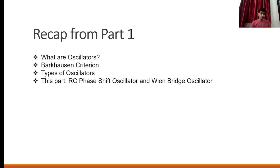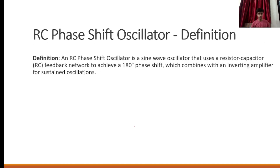In this part, we will discuss the RC phase shift oscillator and the Wien bridge oscillator. So what is the RC phase shift oscillator? An RC phase shift oscillator is a sine wave oscillator that uses a resistor-capacitor feedback network to achieve a 180 degree phase shift, which combines with an inverting amplifier for sustained oscillation.